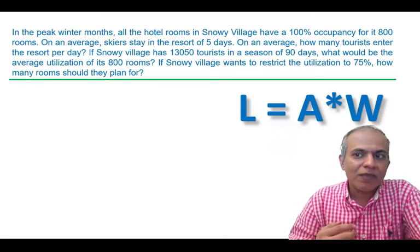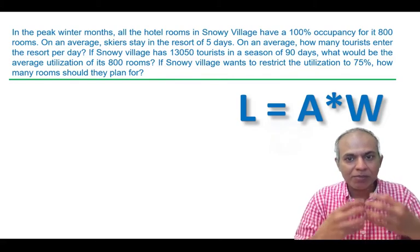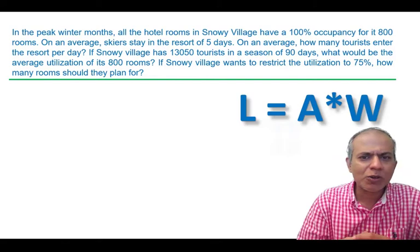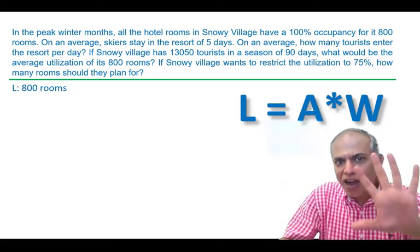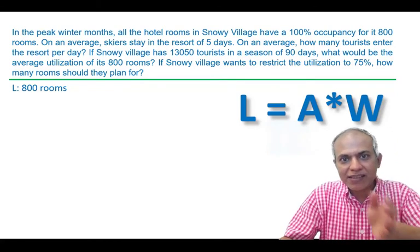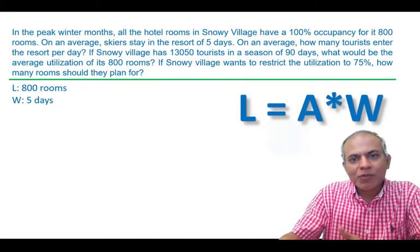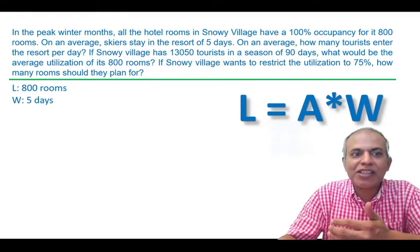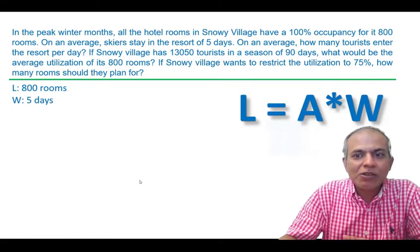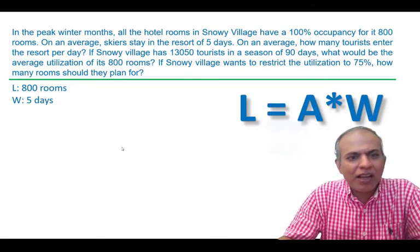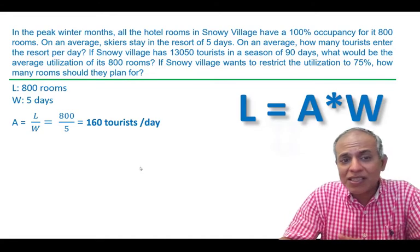Let's start thinking about Little's Law. 800 rooms is something static — it does not move, it's like inventory. So rooms here is clearly L, and I have L = 800. Next, they stay for five days. Days is a unit of time, and anything in a unit of time is a wait time, so W = 5 days. The question asks how many tourists enter the resort per day — anything expressed as 'per' is a rate per time, so I need to find A. That's pretty simple: A = L / W, which gives us 160 tourists per day.